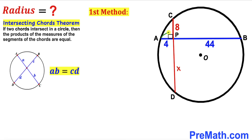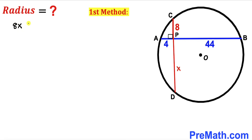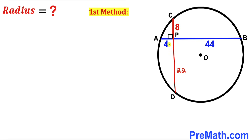Applying the Intersecting Chords Theorem to our problem: chords AB and CD intersect at point P, giving segments 4, 44, 8, and x. Therefore: 8 times x equals 4 times 44, which gives 8x equals 176. Dividing both sides by 8, x equals 22 units. So segment PD has length 22 units.